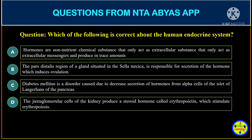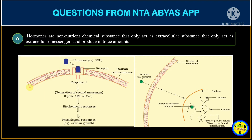Let's read each option one by one and understand whether the statement is correct or not. Option A says that hormones are non-nutrient chemical substances — that's correct, it's a non-nutrient chemical substance. And it says they only act as extracellular messengers and are produced in trace amounts. Producing in trace amounts is a correct statement.